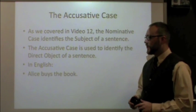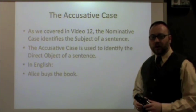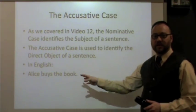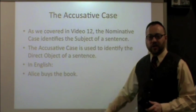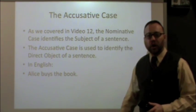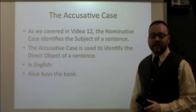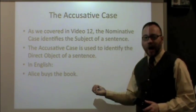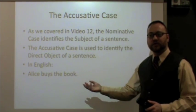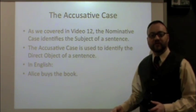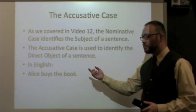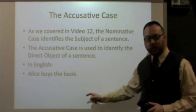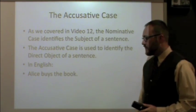An example in English: the sentence 'Alice buys the book.' We covered in video 12 that Alice is the subject — that's the nominative case. Buys is our verb. And then we're left with 'the book,' which is the direct object. It is what she is buying. The direct object by definition is what's receiving the action of the verb. Alice is buying — what is she buying? She's buying the book. That is our direct object, and that's going to take the accusative case.